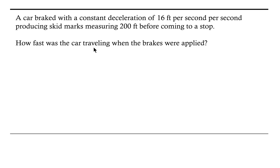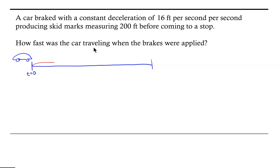Let's take a moment and think about this context. We have a car — it hits the brakes, and we'll say it hits the brakes at time zero. Once it hits the brakes, it travels a distance of 200 feet. Now we don't know when the car actually stops. Let's call that time t equals f for final.